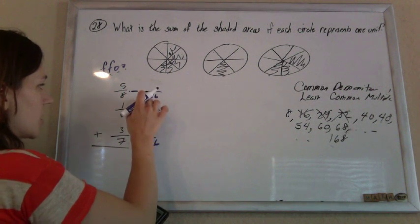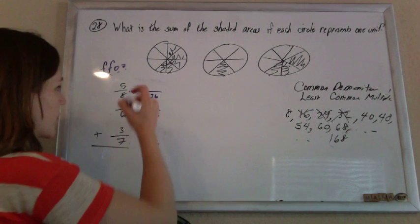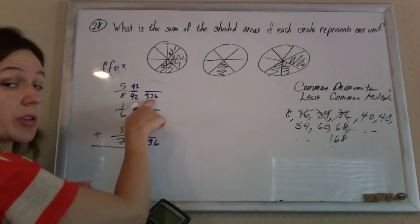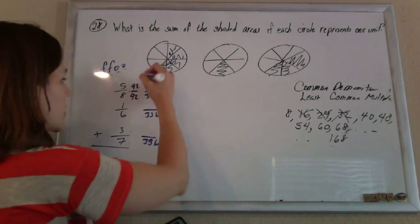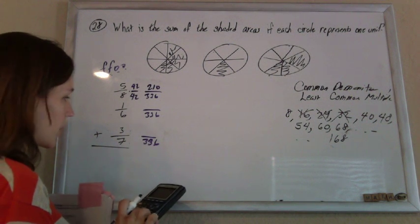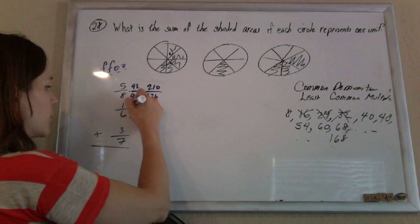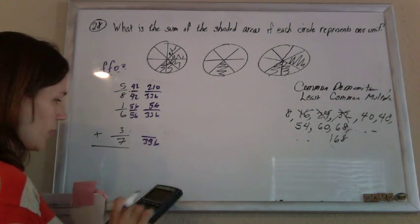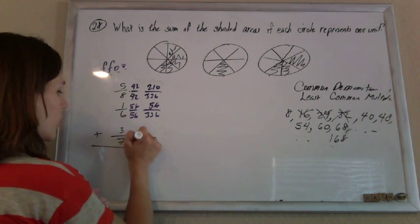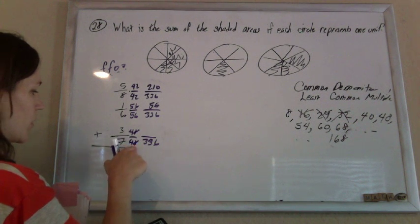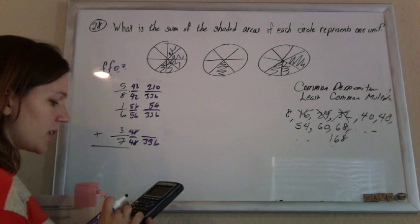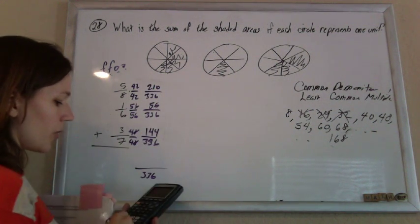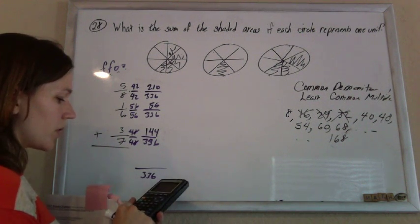Now your fancy forms of 1 just change. 336 divided by 8 is 42. So my fancy form of 1, my fufu, is 42. 8 times 42 gives me 336 as planned. 5 times 42 gives me 210. For the next one, 336 divided by 6 gives me 56. So my fufu here is 56 over 56. The top, 1 times 56 is 56. For this last one, 336 divided by 7 is 48. So my fancy form of 1 is 48 over 48. 3 times 48 gives me 144.